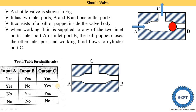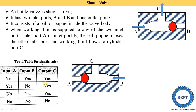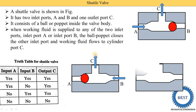Now for case three: fluid is supplied from inlet B. When we supply fluid from B, the ball moves towards the A port and A is closed. So in the truth table: input A is no, input B is yes, and output is achieved at C. Fluid entering at port B is directed to port C.